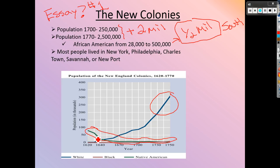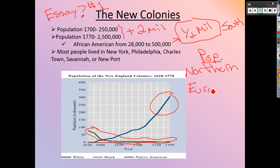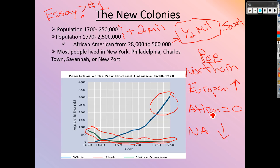There's also a red line that shows the African population stays the same — that's because this map and the essay question focus on population in the northern colonies. When you look at it, the European population goes up, the African population stays at basically zero, and the Native American population goes down. The European population goes up because there are constantly more Europeans coming in every day to the new colonies — it's safer, you can make money, and they're getting more land.